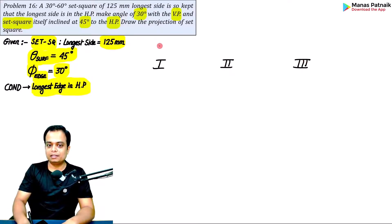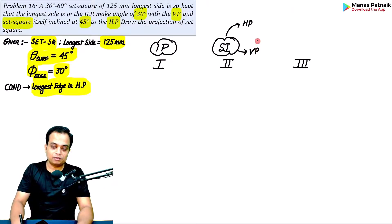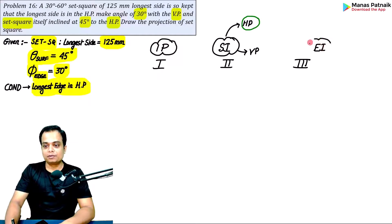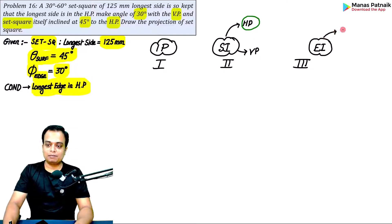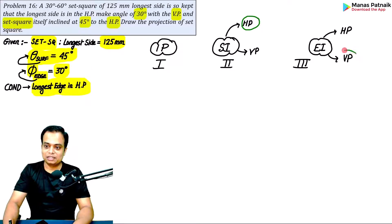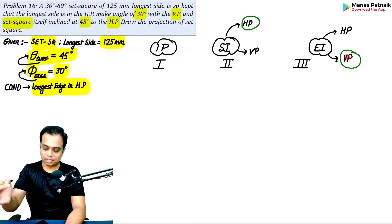Step one is the initial position. Step two is surface inclination — in this case the surface is inclined to the HP, so the angle is theta. Step three is edge inclination — the edge is inclined to the VP, so the angle is phi. Surface was inclined to HP with angle theta; edge is inclined to VP with angle phi. This is a three-step problem.